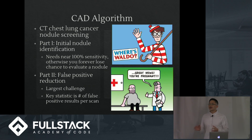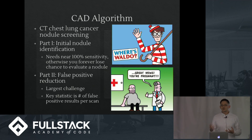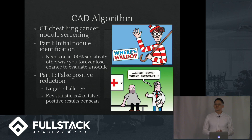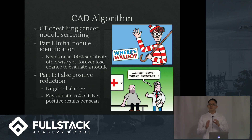Let me walk you through a CAD algorithm — the standard imaging techniques used to figure out if you have cancer. We'll be looking at a CT chest lung cancer screening algorithm as an exemplary model. Most CAD systems have two main parts: the first involves initial nodule identification, finding every abnormality in the lungs. And second, removing the false positives — removing all the abnormalities which don't end up actually being cancer.